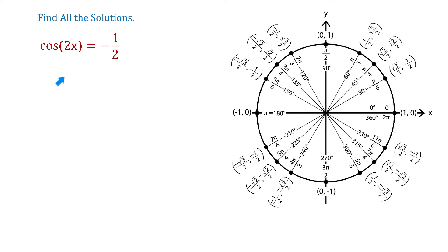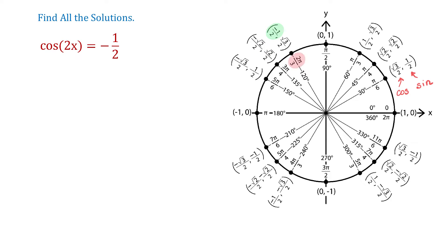In this equation the input for cosine is 2x and the value of cosine is negative 1 half. So on the unit circle we will start by finding all the angles where the value of cosine is negative 1 half. Recall that on the unit circle we have angles and for each of these angles we have corresponding points. The first coordinates of these points represent the values of cosine and the second coordinates represent the values of sine. One angle where cosine is negative 1 half is 2π over 3, and another angle where cosine is negative 1 half is 4π over 3.